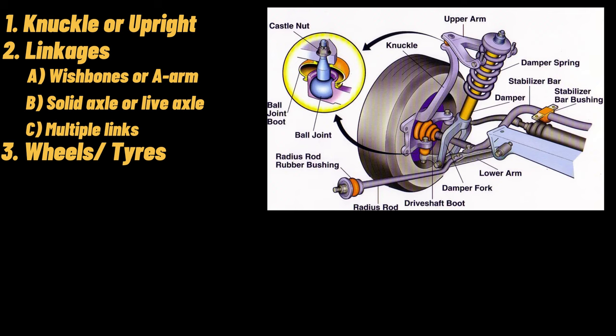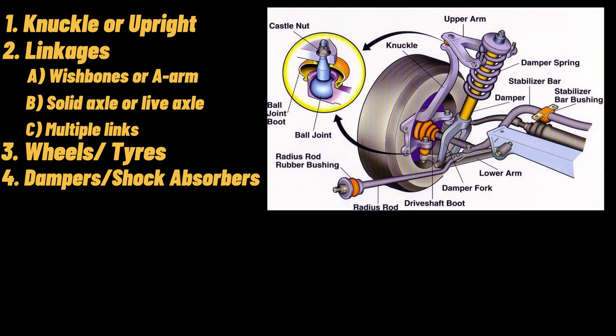To eliminate these vibrations, a suspension system is placed between the body and wheels. The suspension system absorbs the vibrations and helps with comfort. 4. Dampers and Shock Absorbers. Dampers are used to absorb the vibration and dissipate it in the form of heat energy.